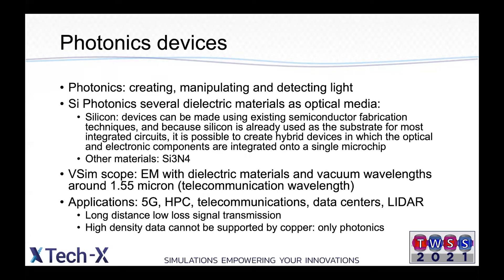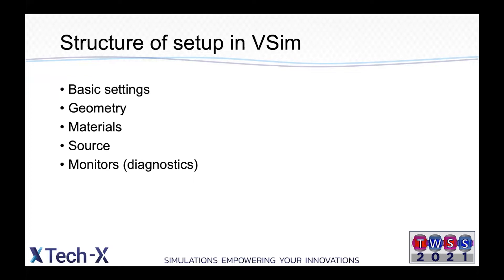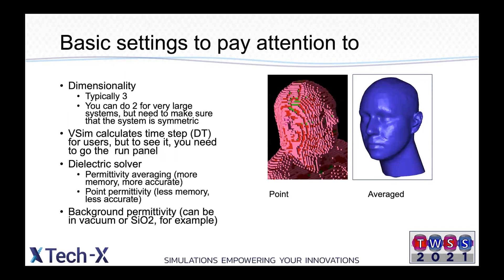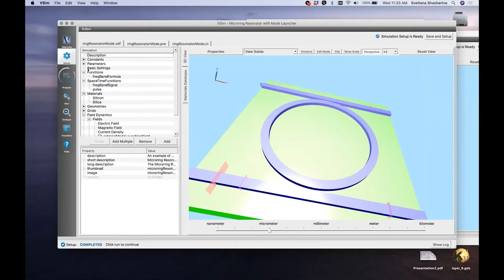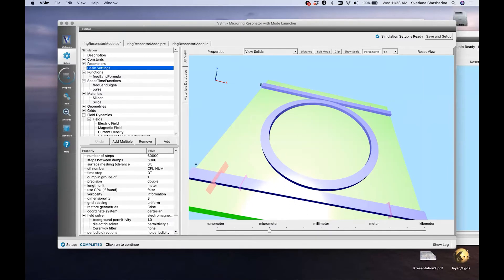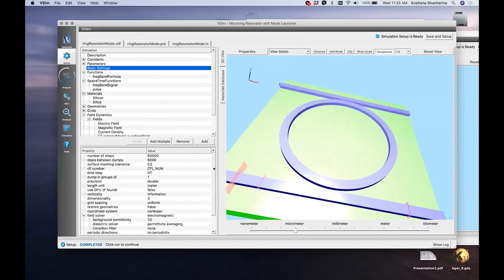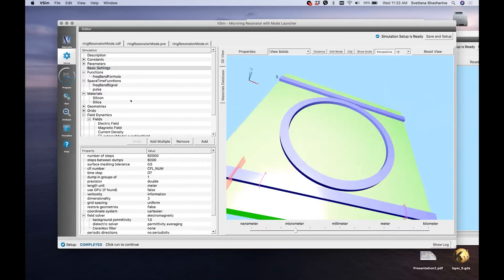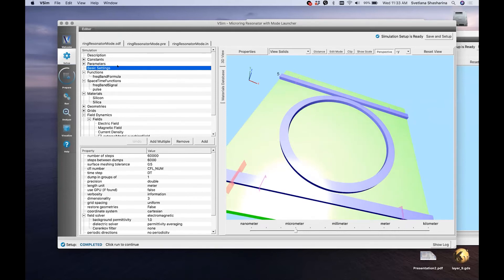Let's talk about how photonics can be modeled in vSIM. The structure of the setup in vSIM consists of several elements: basic settings, geometry, materials, light source, and diagnostics. For basic settings, let me show you how it looks in vSIM. If you open the setup, you'll see a tree view of the setup and also a visualization. Of particular interest, especially for novice users, would be dimensionality, which is typically three for these simulations.